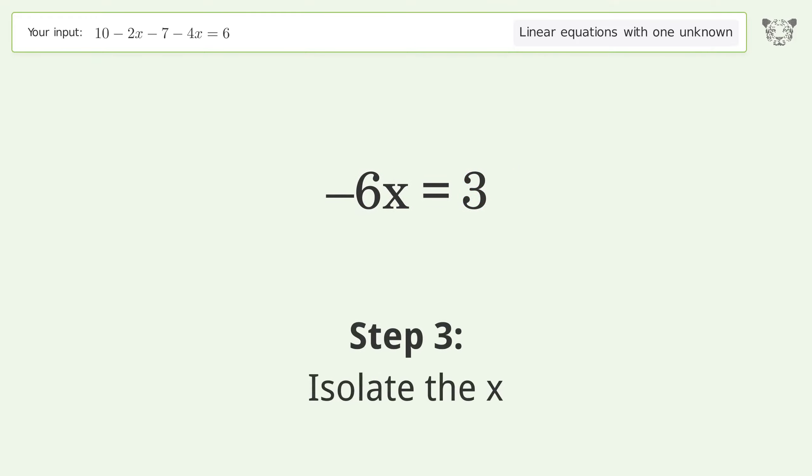Isolate the x. Divide both sides by negative six. Cancel out the negatives.